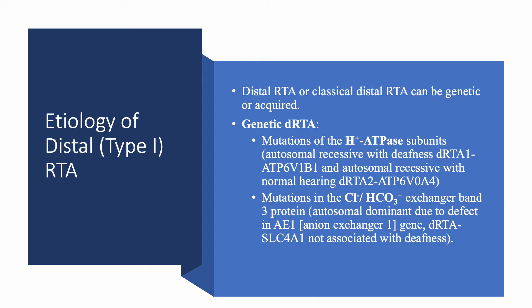What causes distal or type 1 RTA — also called classical distal RTA? The causes are either genetic or acquired. Genetic causes are due to mutations in the hydrogen ATPase or in the chloride-bicarbonate exchanger, either way causing problems with excretion of hydrogen. Some of these mutations are associated with deafness, some are not. Some are autosomal recessive, some are autosomal dominant. These are very rare disorders.